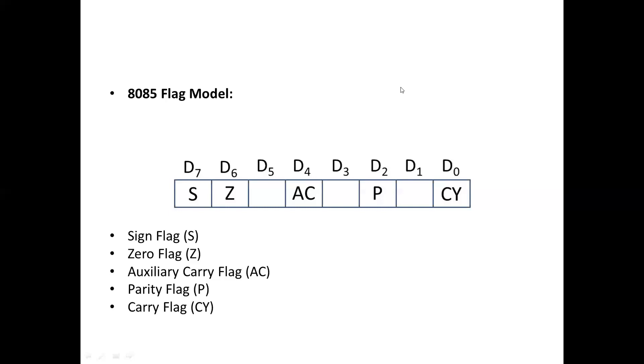Auxiliary carry flag: In any arithmetic operation, if any carry is generated at D3 and passes on to bit 4, the auxiliary carry flag is set to 1, otherwise reset to 0. This flag is used only internally for BCD operation and is not available for the programmer to change the sequence of a program by jump instruction.